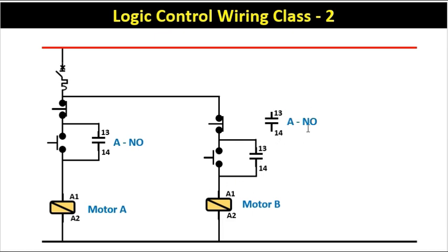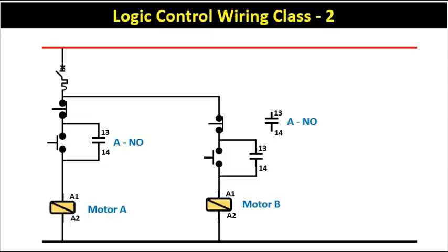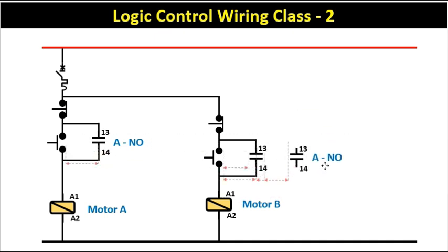Now we have to add the NO contact back into this circuit. This NO contact was used previously in the condition where, if we start motor A, then motor B should start automatically. So this NO contact is being used to turn on motor B. We will connect this NO contact in parallel to the start push button.